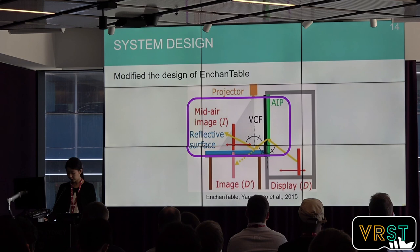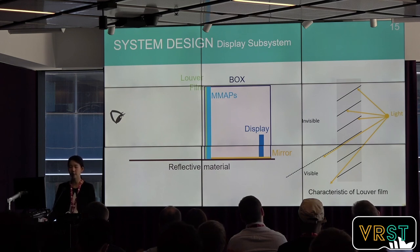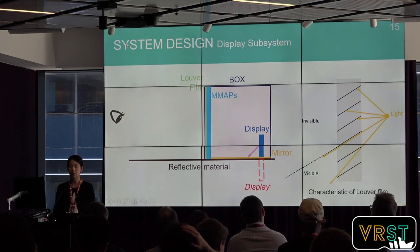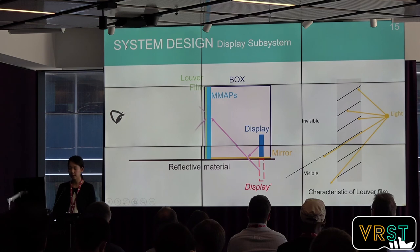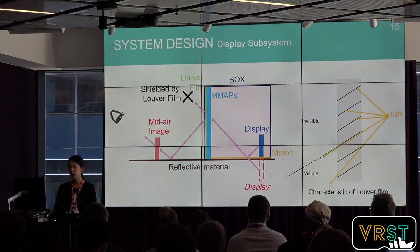We designed the proposed system by modifying the previous system. The display subsystem consists of a display, mirror, MMAPS, rubber film, and reflective material. Light from the display is reflected by the mirror and forms the display plane, which is the light source of the mid-air image. The reflected light goes through the MMAPS and rubber film, is reflected by the reflective material, and finally forms the mid-air image on the surface.